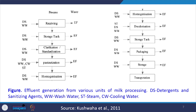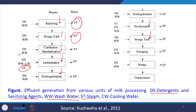Effluent is generated from various units of milk processing. DS stands for detergents and sanitizing agents. The processes include receiving, storing in tanks, clarification and standardization, pasteurization, homogenization, deodorization, storage, packaging, further storage and transportation. In all these processes, wastewater is generated using wash water, with WW representing wash water, DS detergents and sanitizing agents.